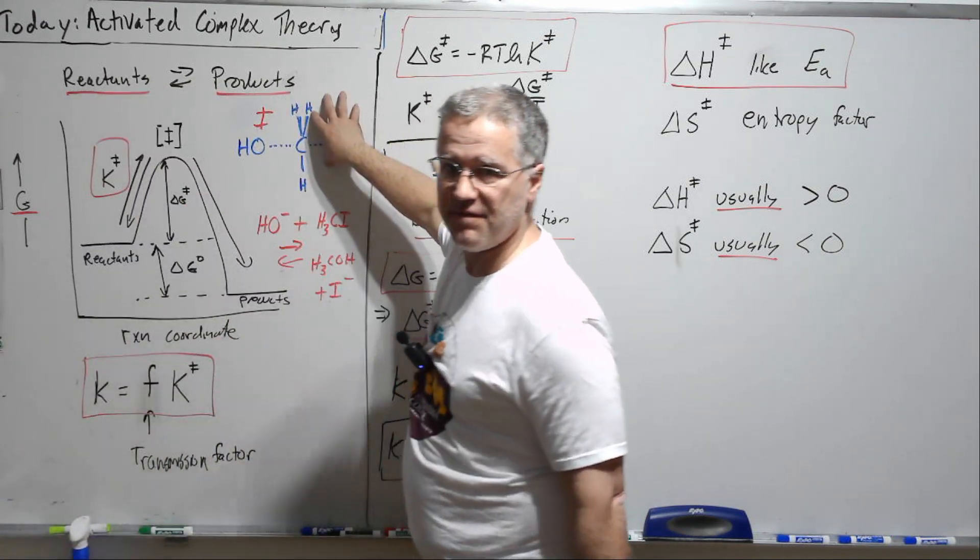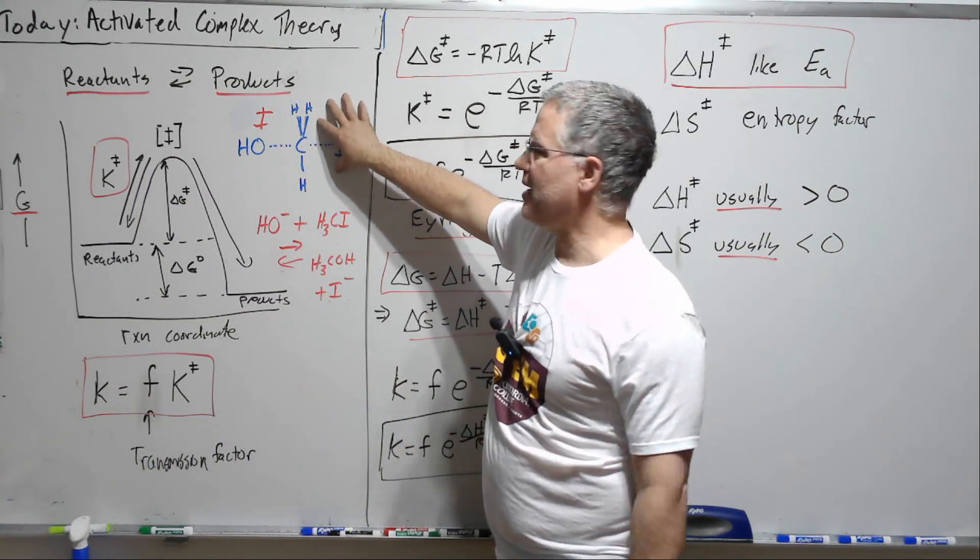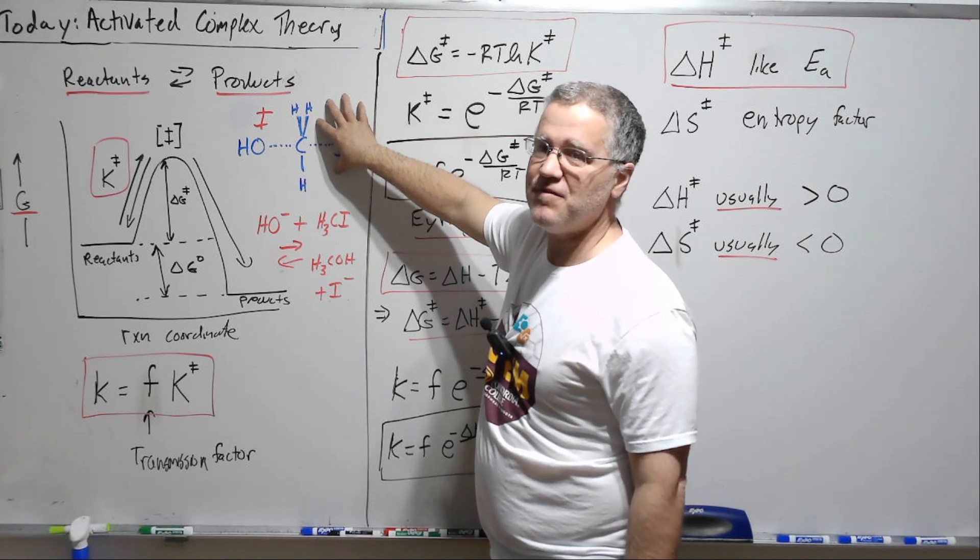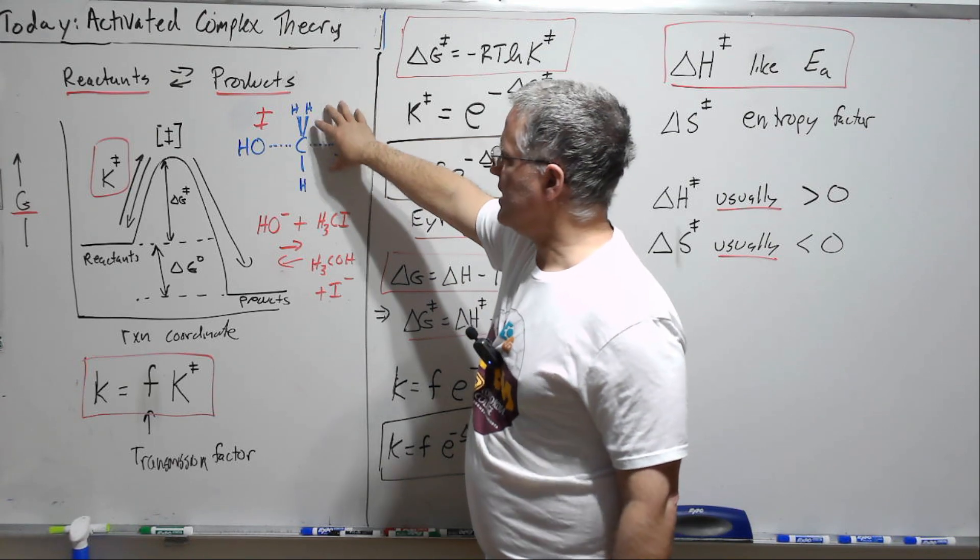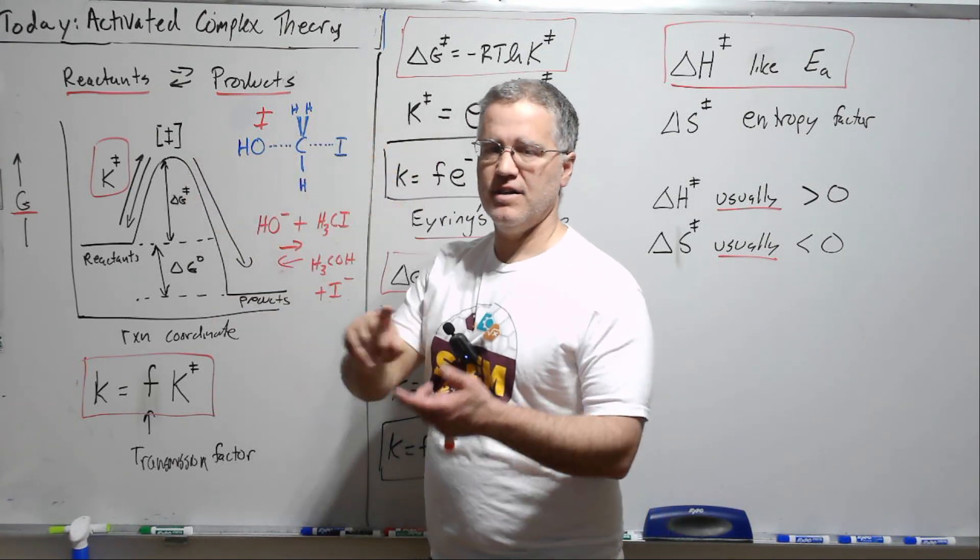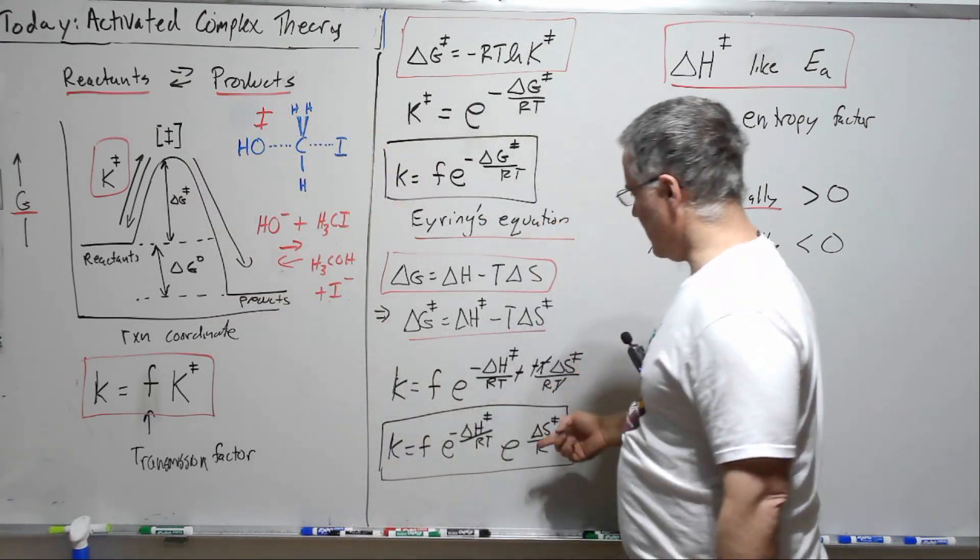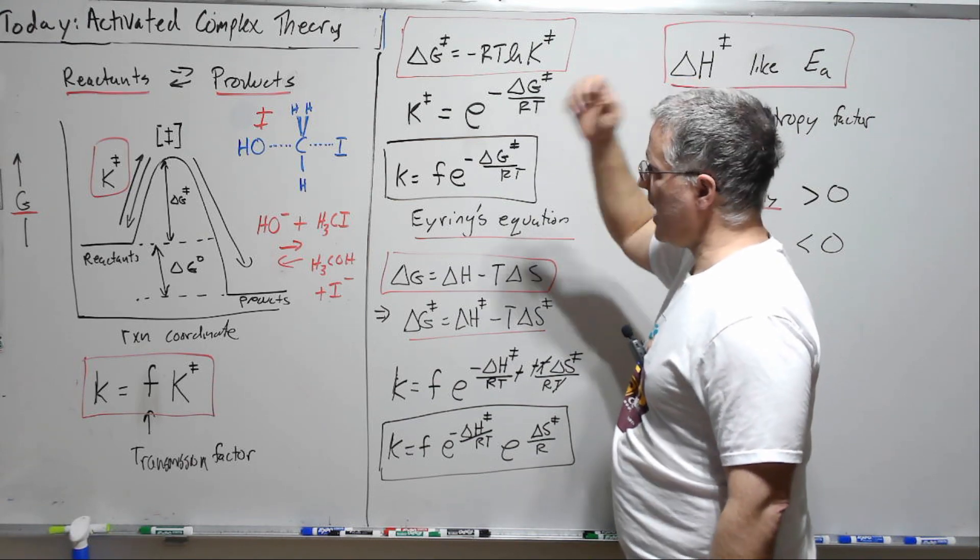This would be a very, if this were a stable thermodynamic state, we would say this would be a very, very unstable situation, a very unfavorable. And we would definitely have a very positive delta G.